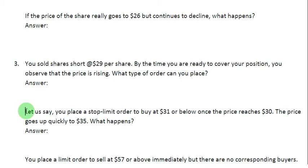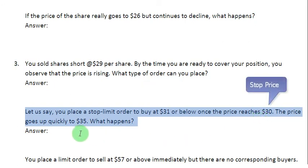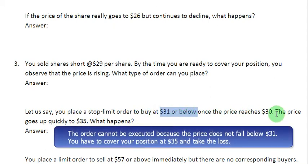Now, let us say you place a stop limit order to buy at $31 or below once the price reaches $30, and what happens is that the price goes quickly up to $35. What you have told your broker is that once the stop price is reached, the broker should buy at a price of $31 or below — so you have specified a limit price. But the price rather than falling continues to go up to $35 very quickly. Your order cannot be executed because the price does not fall below $31 at all, and you are stuck having to cover your position at $35 and take the loss.